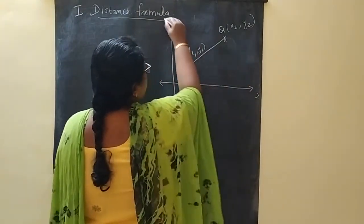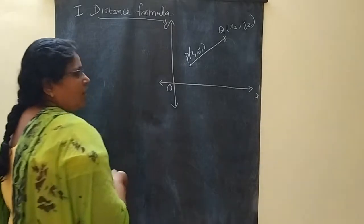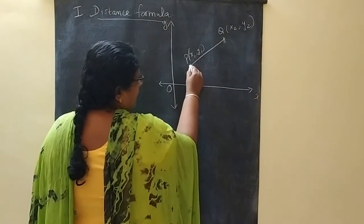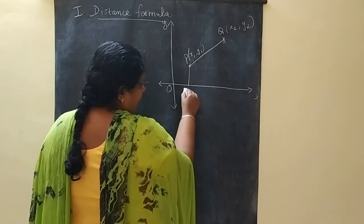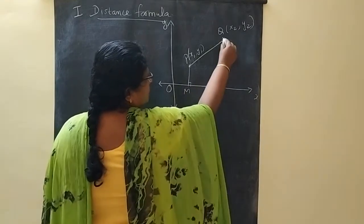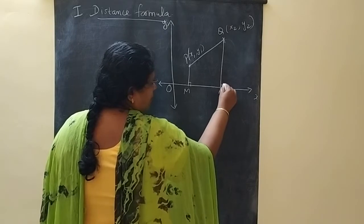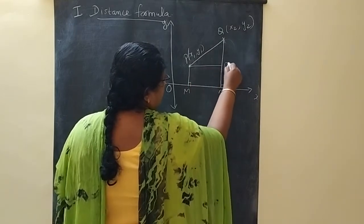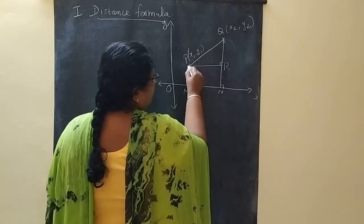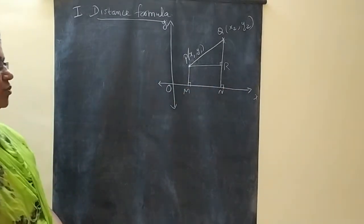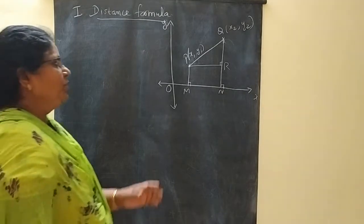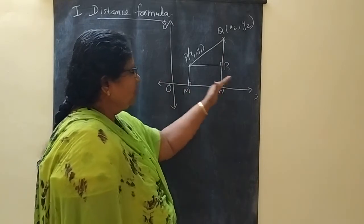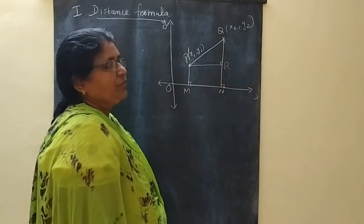This is our X axis and Y axis, and this is the origin point. For deriving the formula, I am drawing a perpendicular PM to the X axis, QN to the X axis, and then a perpendicular PR from P to QN. So three constructions we did: PM perpendicular to X axis, QN perpendicular to X axis, and PR perpendicular to QN.